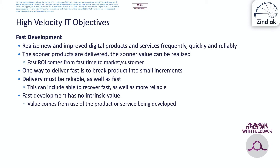The scope of the fast development objective includes realising new and improved digital products and services frequently, quickly, and reliably. Development refers to product development in general, although application development is often included in that. In general, the sooner digital products are delivered, the sooner value can be realised. In addition to being fast and frequent, delivery must be reliable. Fast development has no intrinsic value — it is related to the value of whatever is being developed.